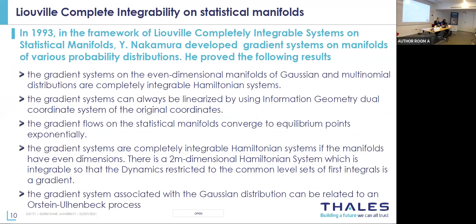A first link was discovered by Nakamura in 1993 in the framework of Liouville completely integrable systems on statistical manifolds. Nakamura developed gradient systems on manifolds of various probability distributions and proved the following: the gradient system on even-dimensional manifolds of Gaussian multi-dimensional distributions are completely integrable Hamiltonian systems. The gradient system can always be linearized using the information geometry dual coordinate system, and the gradient flow on the statistical manifold converges to an equilibrium point exponentially. It is a 2m-dimensional Hamiltonian system where the dynamics restricted to the common level set of first integrals is a gradient.